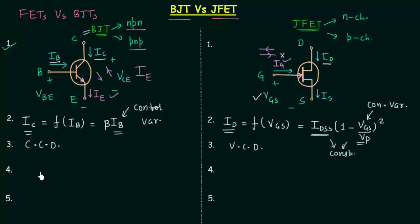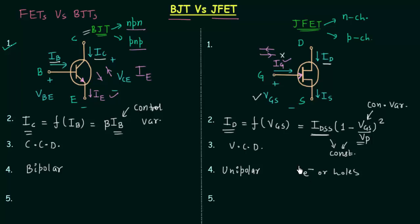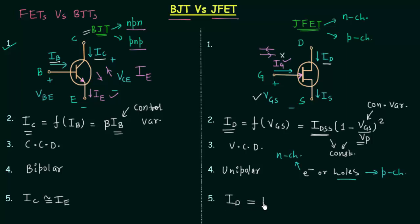The fourth point is related to charge carriers. In case of BJT, both charge carriers — electrons and holes — are involved, and because of this we call BJT a bipolar device. In case of JFET, only one type of charge carrier is involved, either electrons or holes, so we call JFET a unipolar device. When electrons are the only charge carriers we call it N-channel JFET; when holes are the charge carriers we call it P-channel JFET. Also, the collector current IC is nearly equal to the emitter current IE, and in case of JFET the drain current ID equals the source current IS.